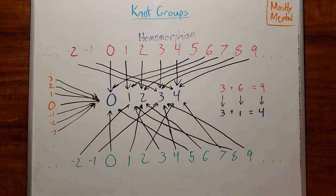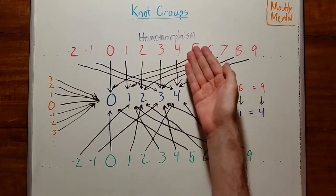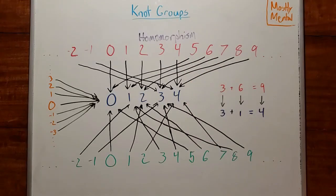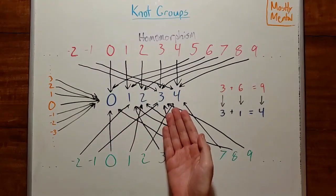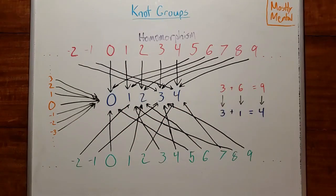The real power of algebra isn't in any one group, but rather in the mappings between them, the so-called homomorphisms. A homomorphism is a mapping from one group to another that preserves the structure. For instance, say we have the integers and the integers mod 5, both with the operation of addition.